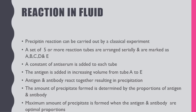Precipitation reaction in fluid can be carried out by a classical experiment. A set of five or more reaction tubes are arranged serially and are marked as A, B, C, D, and E. A constant volume of antiserum is added to each tube, then the antigen is added in increasing volume from tube A to E. The antigen and antibody react together resulting in precipitation. The amount of precipitate formed is determined by the proportion of antigen and antibody. Maximum amount of precipitate is formed when the antigen and antibody are in optimal proportion.